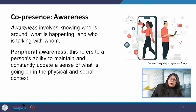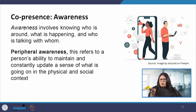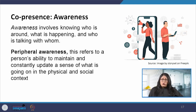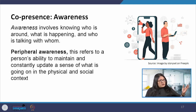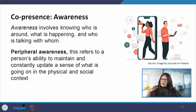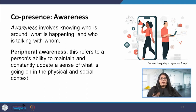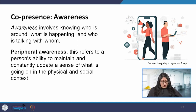Co-presence has another aspect which is awareness. When we are at a social gathering and talking with somebody, at the same time through peripheral vision we are also aware of what other groups of people are doing. We know how somebody's mood is changing — somebody is getting upset or somebody is sitting alone in a corner. While we are talking and responding, we are still aware of our surroundings. This is quite similar to how a person's awareness can be maintained and updated so that they know what is going on in the physical and social context.